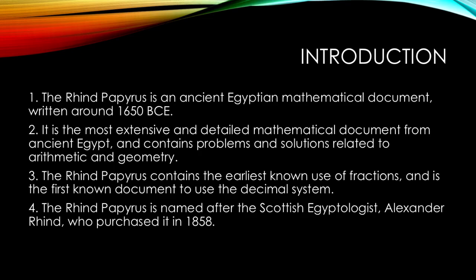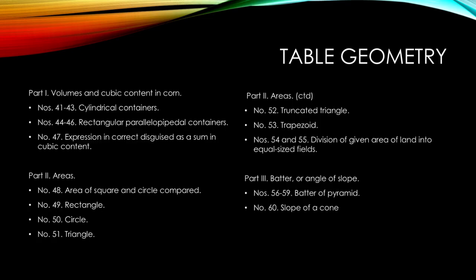It's named after Alexander Rhind, a Scottish Egyptologist. He purchased the papyrus in 1858. The papyrus has three sections: one about arithmetic, a second about geometry, and another one with miscellaneous topics.